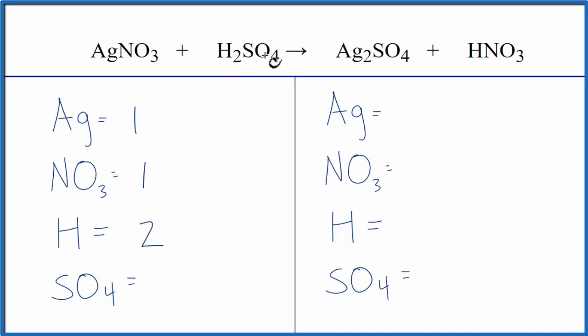that's the sulfate group. That is a polyatomic ion, and it stays together as well. So I'm just going to say I have one sulfate ion, one SO4 here. That's going to make it a lot easier as we balance this equation.